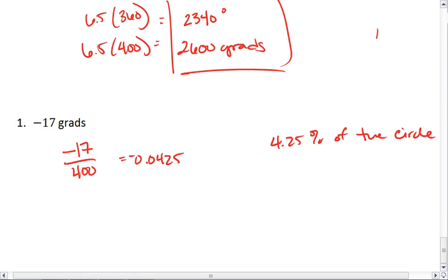I take this number, multiply it by 360 to get degrees, multiply it by 2 pi to get radians. I find that that's about negative 15.3 degrees.